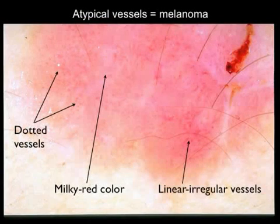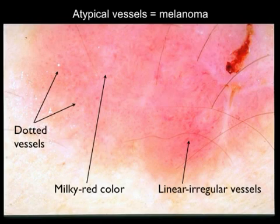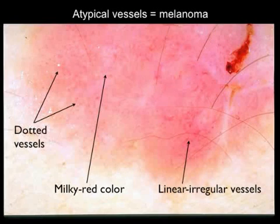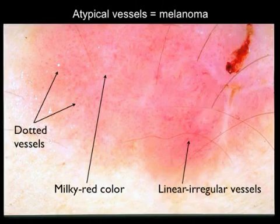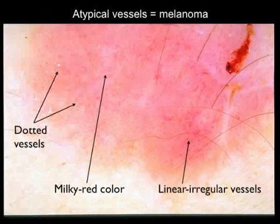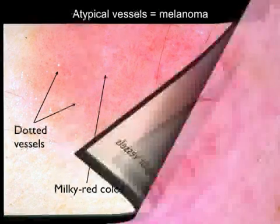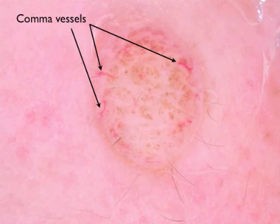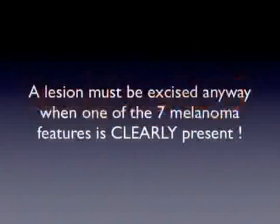Atypical vessels are the last but not least melanoma-specific criterion. They are represented by dotted vessels, linear irregular vessels, or a combination of both, usually lying on a background of milky-red coloration. Atypical vessels are not easily found in heavily pigmented melanomas, but they can be the only valuable feature in hypomelanotic and amelanotic melanomas. Atypical vessels should not be confused with the typical arborizing vessels of basal cell carcinoma, like the example here, and should be differentiated from comma vessels, typically found in globular congenital nevi, as is the case here.